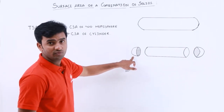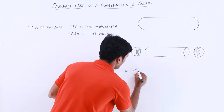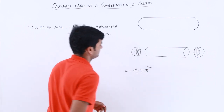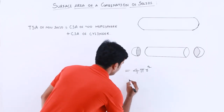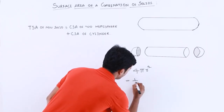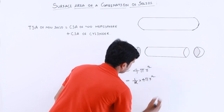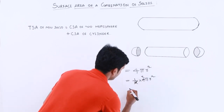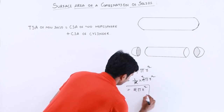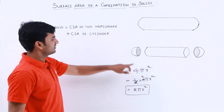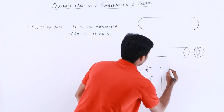Let's find out the surface area. We know the surface area of a sphere is 4πr². But if you observe, this solid has a half portion of a sphere, so we divide by 2: half of 4πr². Cancelling 4 with 2 gives us 2πr². So the curved surface area of one hemisphere is 2πr².